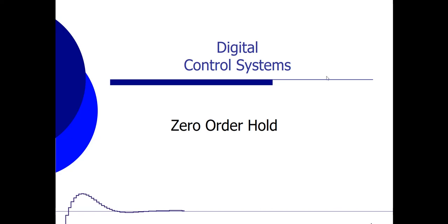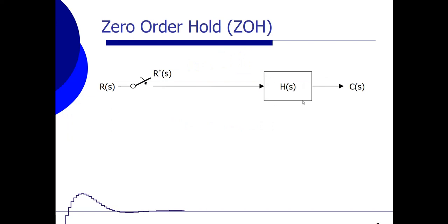In this video, we are going to discuss the zero-order hold. Suppose we have a system H, and we apply a signal R — the setpoint or reference value — to H. After this signal R, we place a so-called sampler, indicated by this switch over here. At this point we get sampled values, meaning we only have values at the moment the sampler closes. These sampled signals are indicated by the star. So we have sampled values as input of H, and the output of H is the signal C.